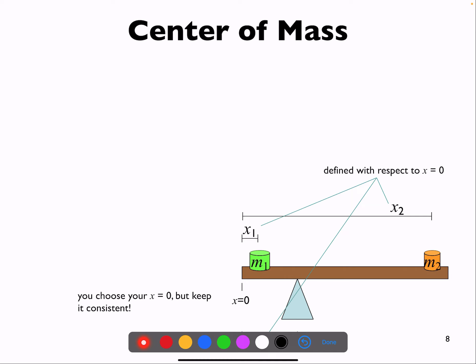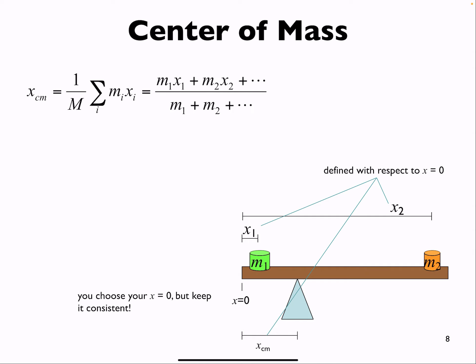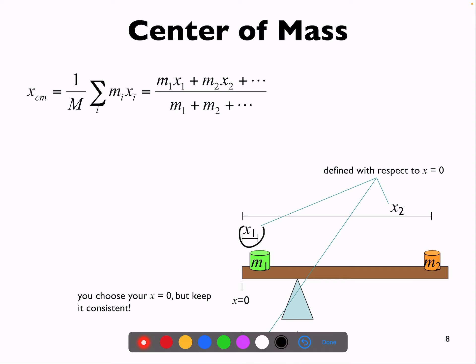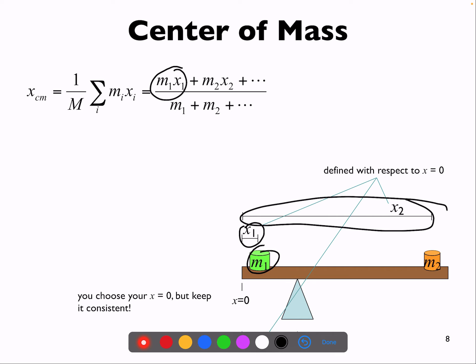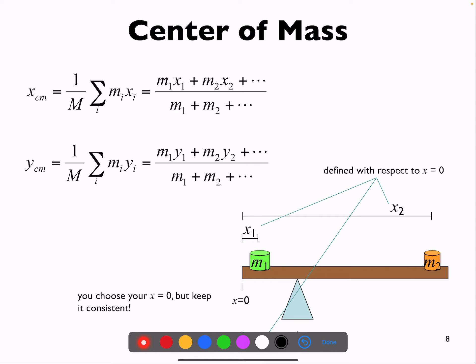To figure out the center of mass, we always pick a zero and set up this sum: we sum up each distance times the mass at that location, then divide by the sum of all the masses. Written mathematically with a summation, it's one over the total mass times the sum of all distances times their masses. Because this can be done in two dimensions, there's an X and a Y version - and potentially a Z version.